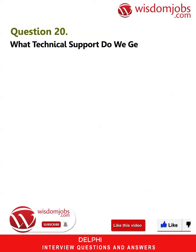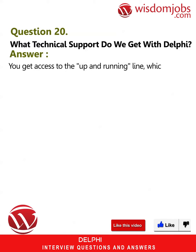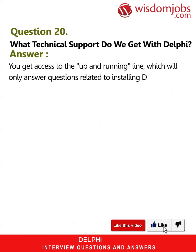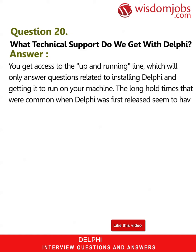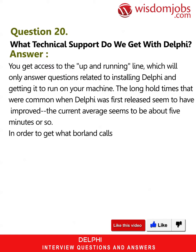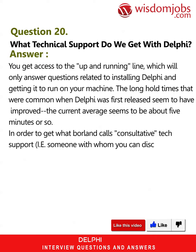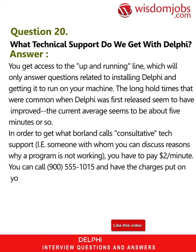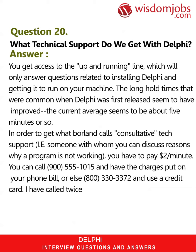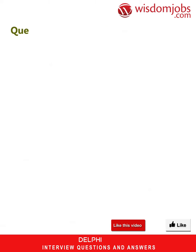Question 20: What technical support do we get with Delphi? Answer: You get access to the Up and Running line, which will only answer questions related to installing Delphi and getting it to run on your machine. The long hold times common when Delphi was first released have improved — the current average seems to be about five minutes. For consultative tech support, you have to pay two dollars per minute: call 900-555-1015 and have the charges put on your phone bill, or 800-130-3372 and use a credit card. I called twice and they couldn't answer my question either time, though they didn't charge me.